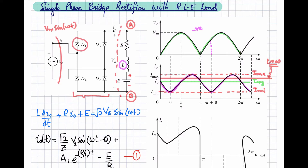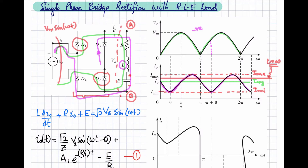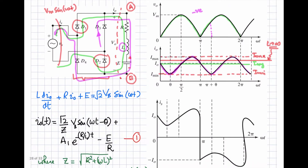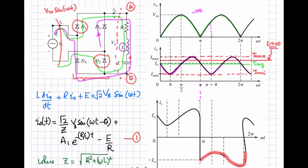In the positive half cycle, diodes D1 and D2 will be conducting, and the current follows that path. In the negative half cycle, the current flows through diode D3, through the load, through diode D4, back to the source — so the direction of current in the source is reversed. The source current is positive for the first half cycle and negative for the next half cycle, as seen in the waveform.